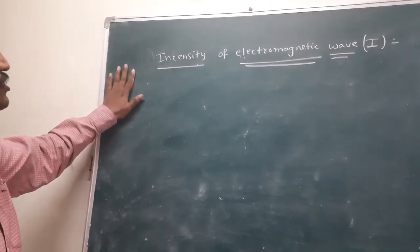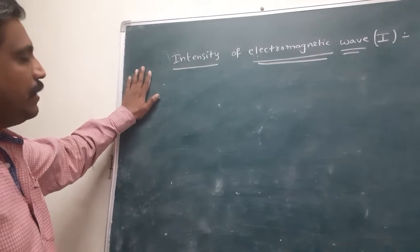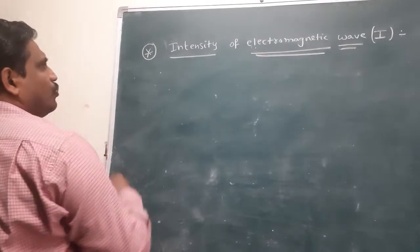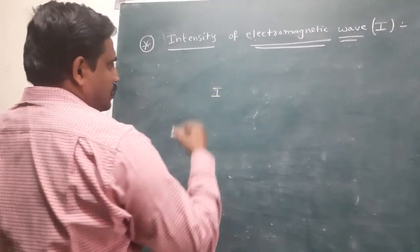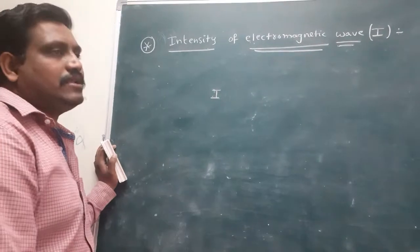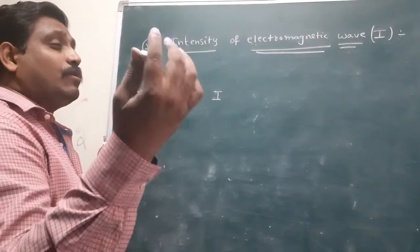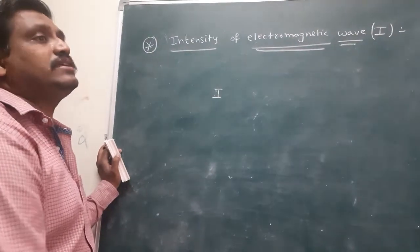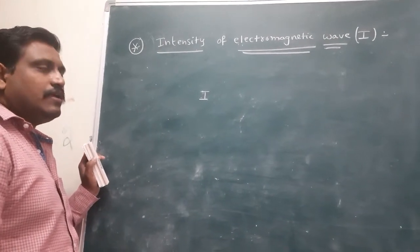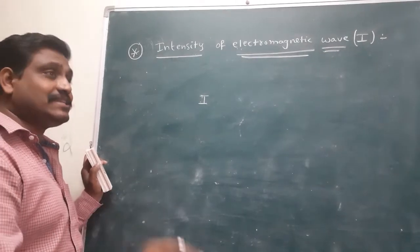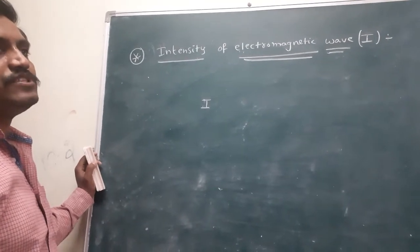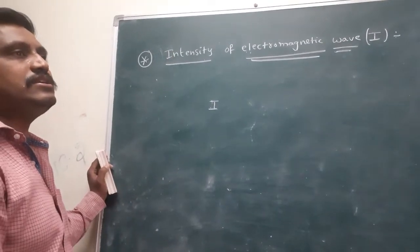Today, the second video is on the Intensity of Electromagnetic Waves. Intensity means brightness. If intensity is more, there is more brightness; if intensity is less, there is less brightness. In sound, intensity is nothing but loudness. In light, electromagnetic waves are nothing but light, so intensity is nothing but the brightness.